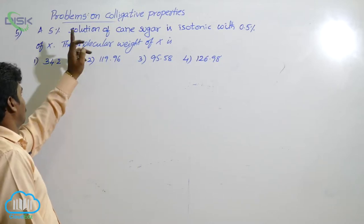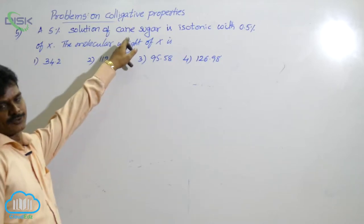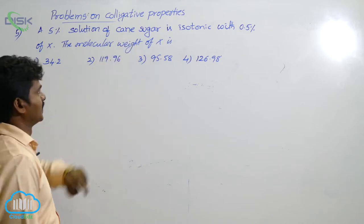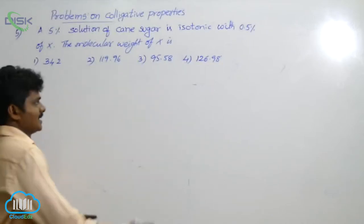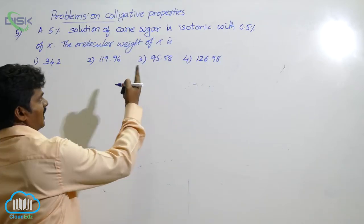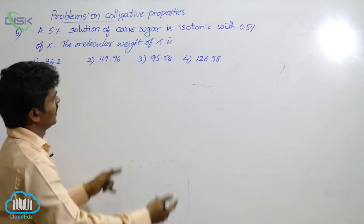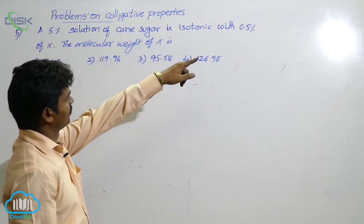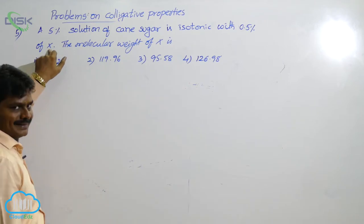See the next problem. Here 5% solution of cane sugar. Cane sugar means sucrose. What is the formula of sucrose? Sucrose formula C12H22O11. Next 0.5% of X is unknown solute. These are isotonic.